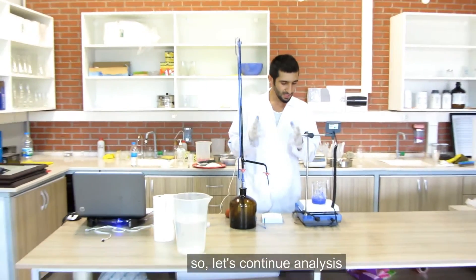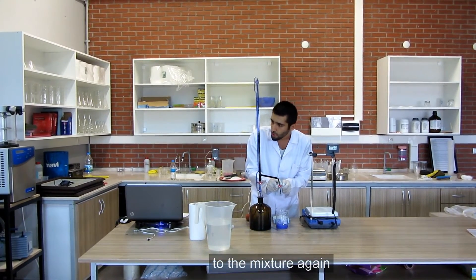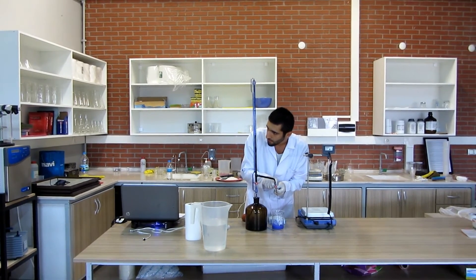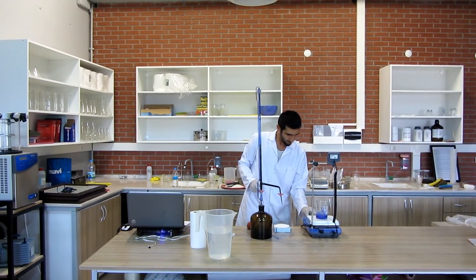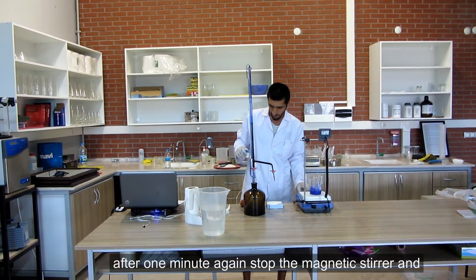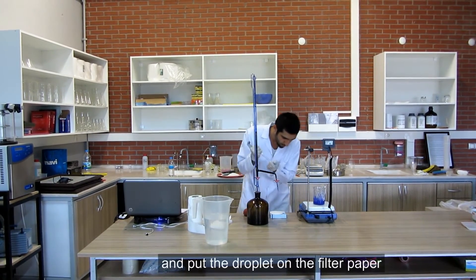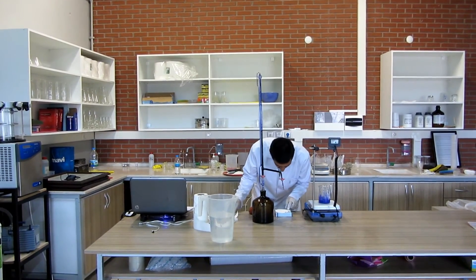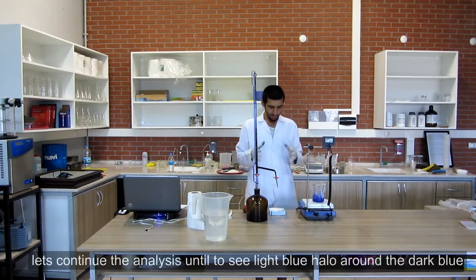So let's continue analysis. Again I'll add 3 cc Methylene Blue solution to the mixture, and mix it again one minute by magnetic stirrer. After one minute again stop the magnetic stirrer and take the droplet from the mixture and put the droplet on the filtered paper.